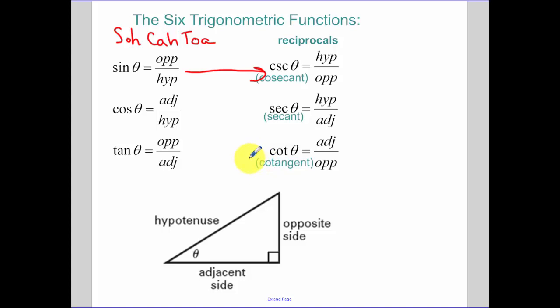Now how I remember which ones are reciprocals, each pairing has a co with it. Tangent and cotangent are paired together. Cosine gets paired with secant. And sine, since there's no co piece of sine, it gets paired with cosecant.